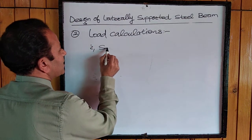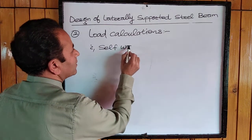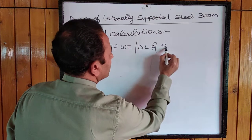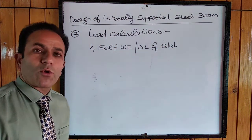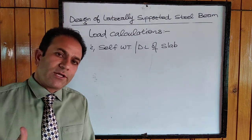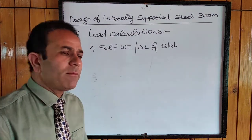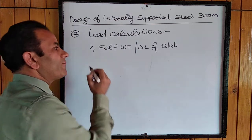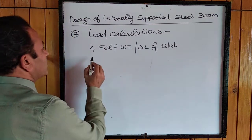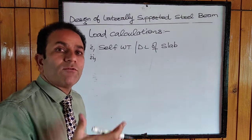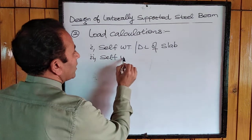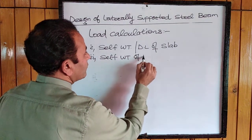First, we calculate the self-weight or dead load of the slab it is supporting. We define the sharing area of that particular beam and calculate the self-weight of the slab per meter run. Second, the slab will have certain flooring material over it, which is also a dead load, so we calculate the self-weight of the flooring material.